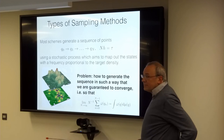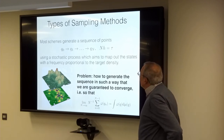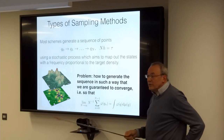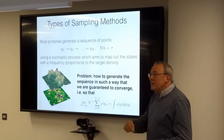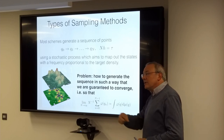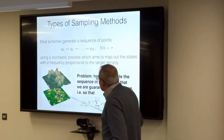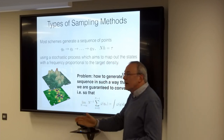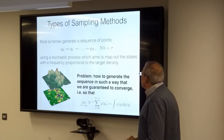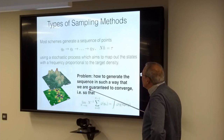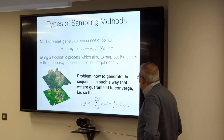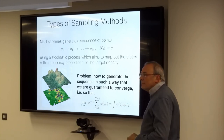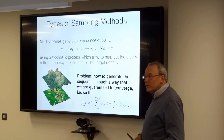Most sampling schemes generate a sequence of states, turning that high-dimensional integration problem into a one-dimensional path problem — one of the things you can do if you have a concentrated distribution. The path samples the distribution, traveling around visiting regions of high probability. The question is how to generate this sequence in a way that guarantees convergence, so that the average along the path eventually gives the integral we're interested in.